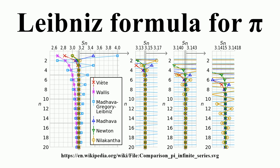The series for the inverse tangent function, which is also known as Gregory's series, can be given by the Liebner's formula for pi, obtained by plugging x equals 1 into the inverse tangent series. It also is the Dirichlet L-series of the non-principal Dirichlet character of modulus 4 evaluated at s equals 1, and therefore the value beta of the Dirichlet beta function.